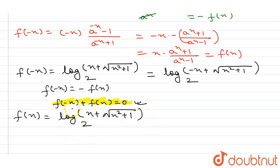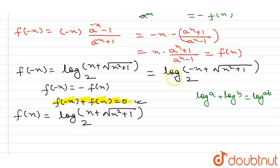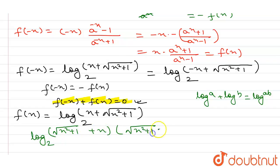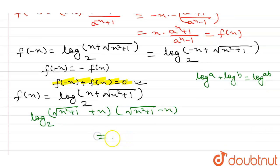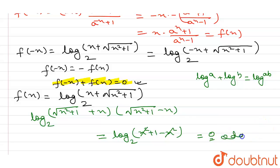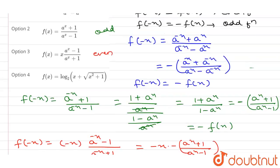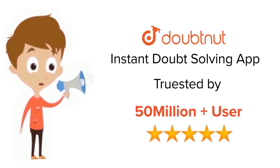Using the property log(a) + log(b) = log(ab), adding f(x) and f(−x) gives log₂[(√(x²+1) + x)(√(x²+1) − x)] = log₂(x²+1 − x²) = log₂(1) = 0. So this is also an odd function. The correct answer is option 3. Thank you. Download the Doubtnut app today.